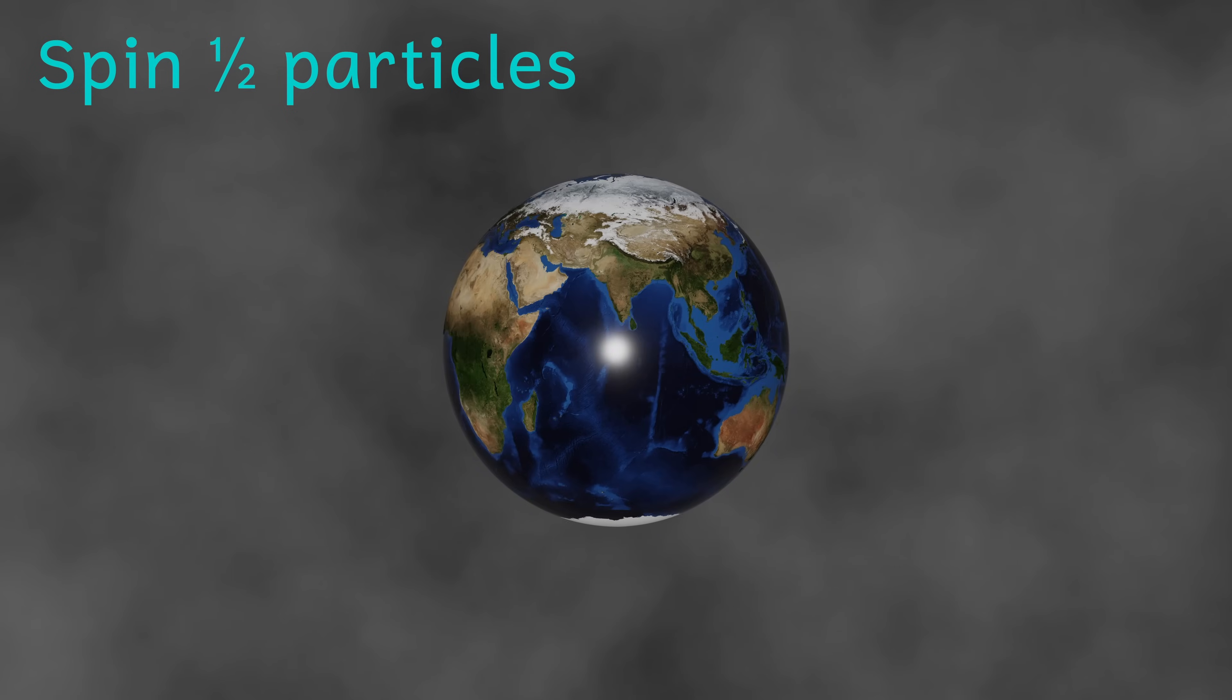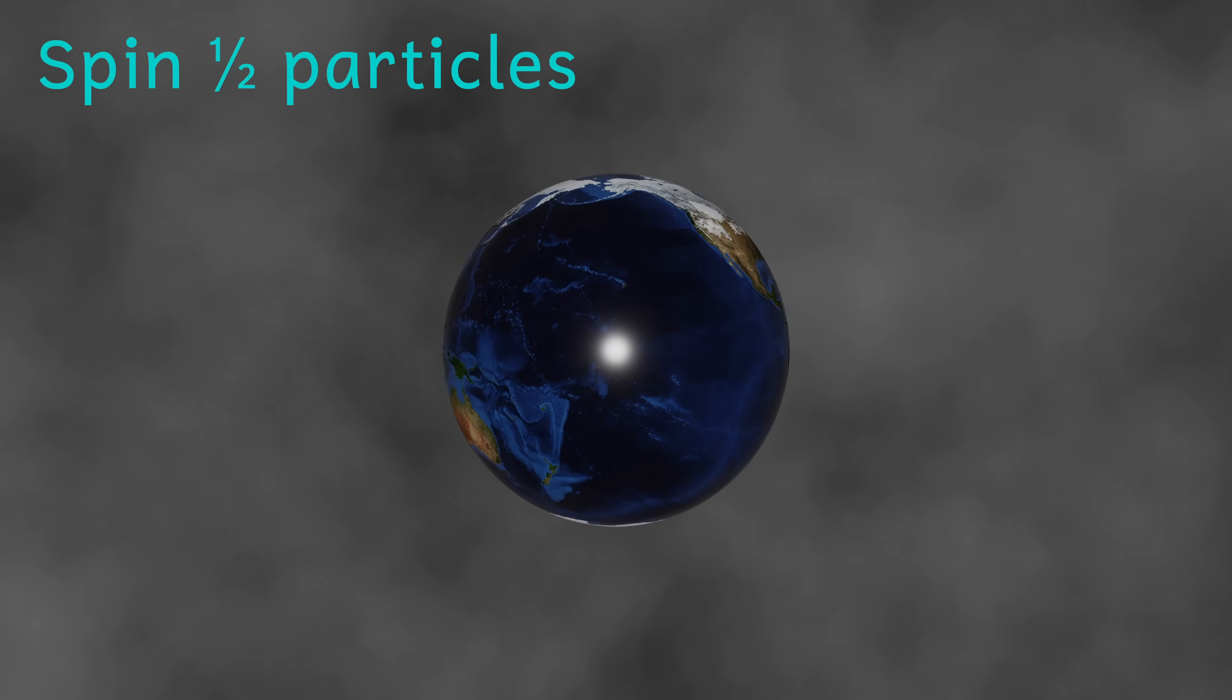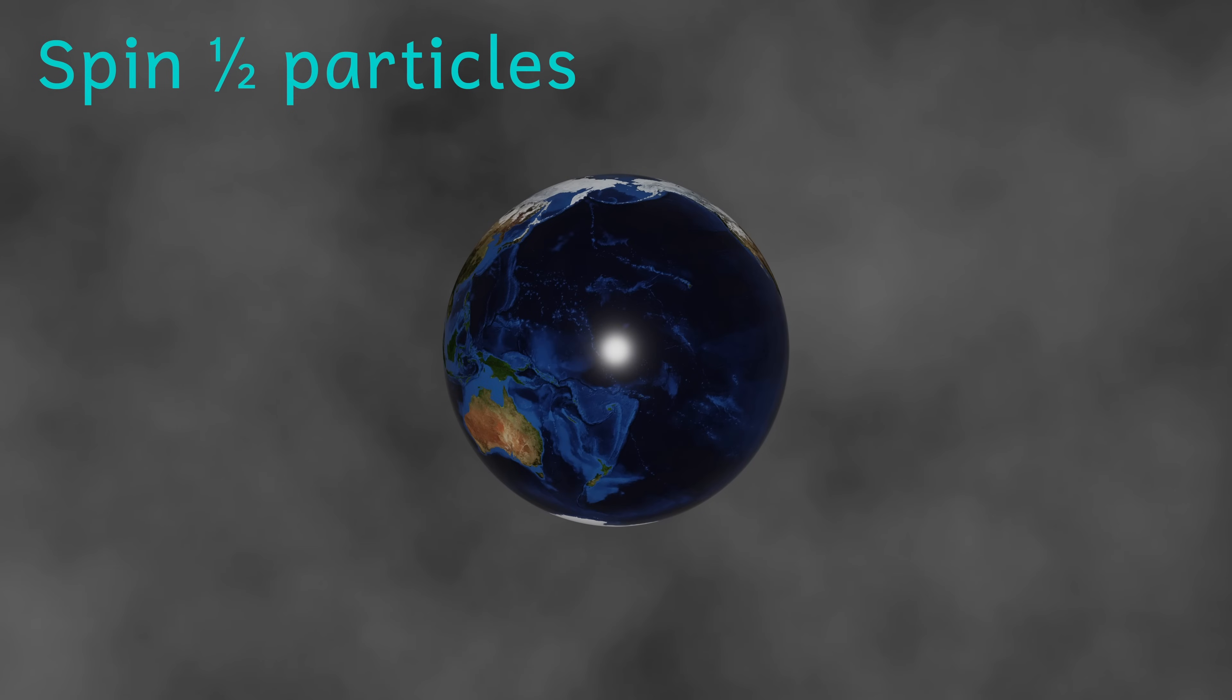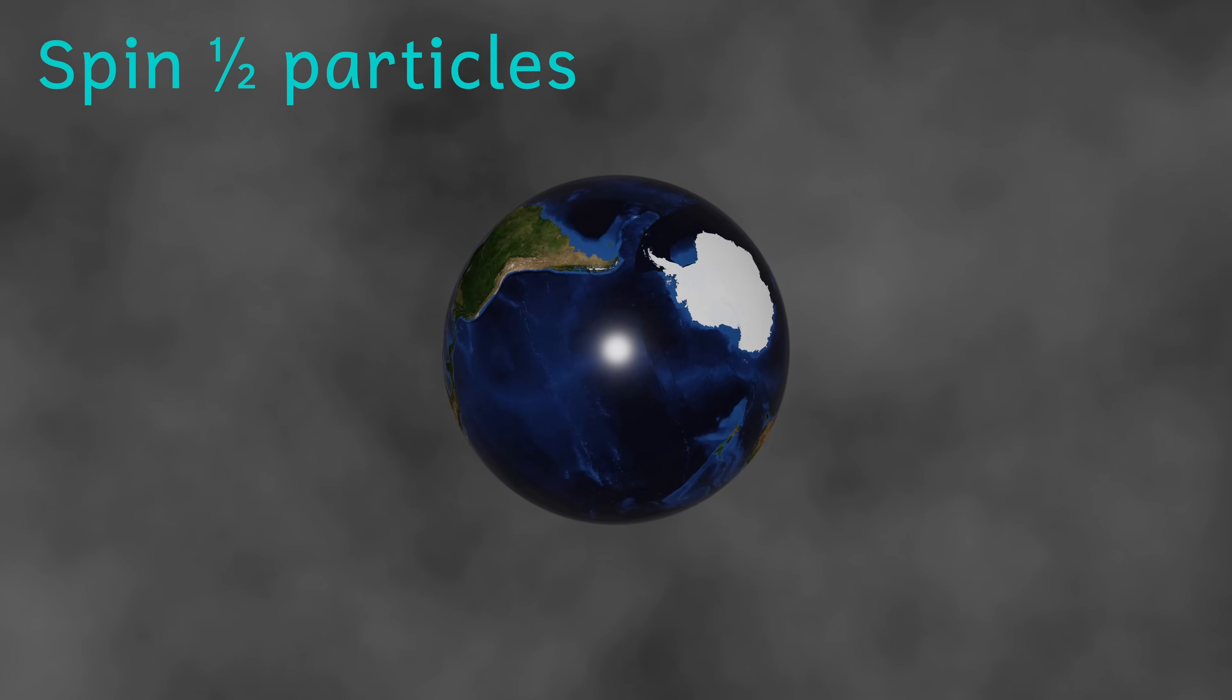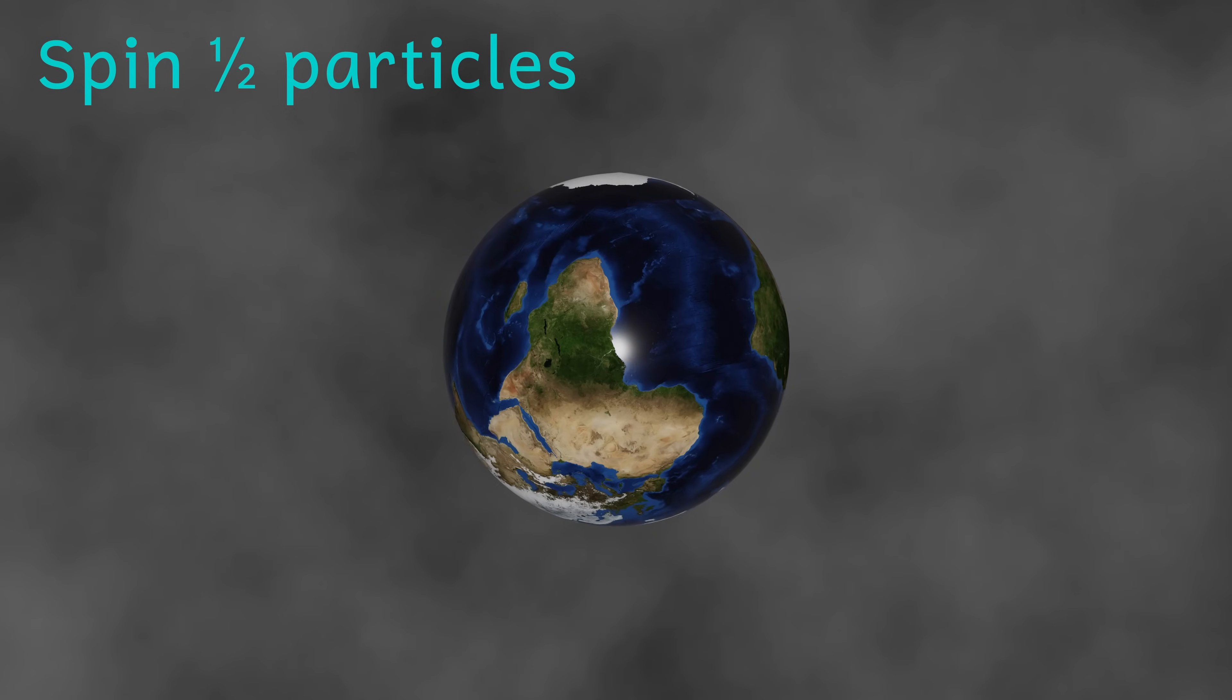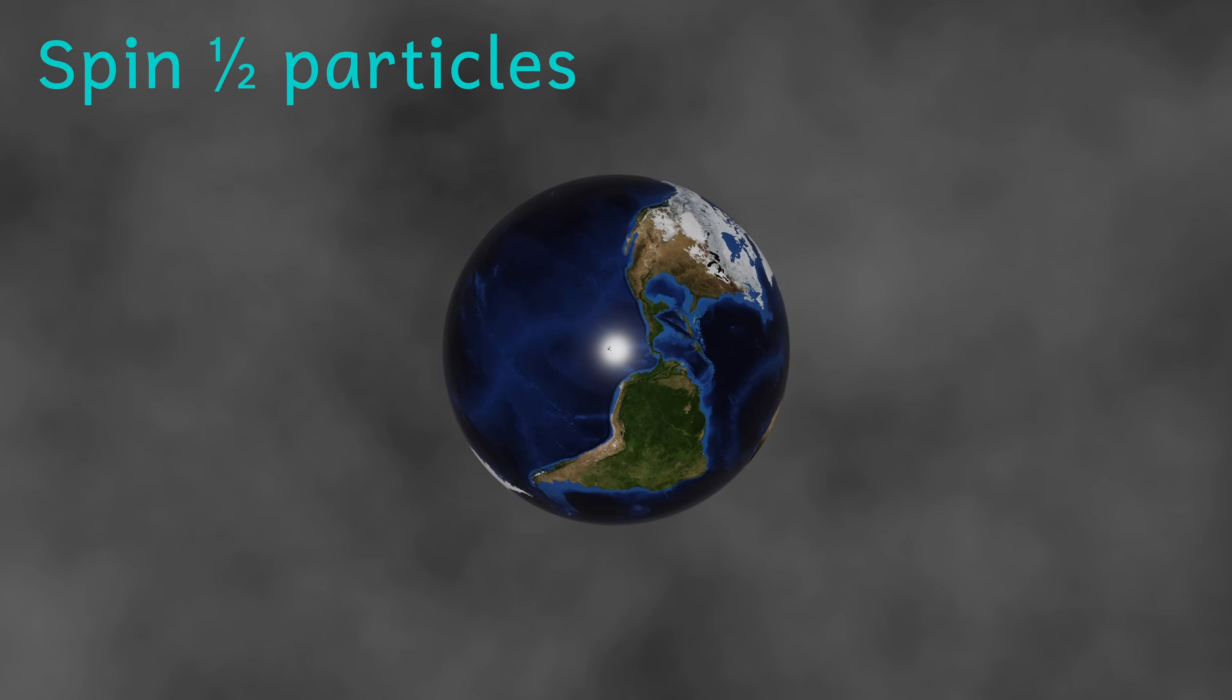But what does spin-a-half mean? Well, if we think about spin as being actual spin of particles, it's not really, but let's just imagine. And imagine the planet Earth. The Earth has to rotate around 360 degrees until it looks the same again. This will be equivalent to a spin-1 particle. Spin-a-half, in terms of the Earth, it would mean that the Earth would have to rotate through 720 degrees, or two full rotations, before it comes back to the initial configuration. Like I said, quantum.